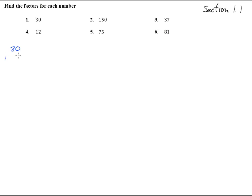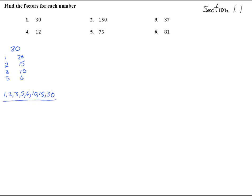That's 1 times 30, 2 times 15, 3 times 10. Does 4 go into 30? Nope, not quite. 5 goes into 30, 6 times. So there we have them: 1, 2, 3, 5, 6, 10, 15, and 30 — that's the list of factors.